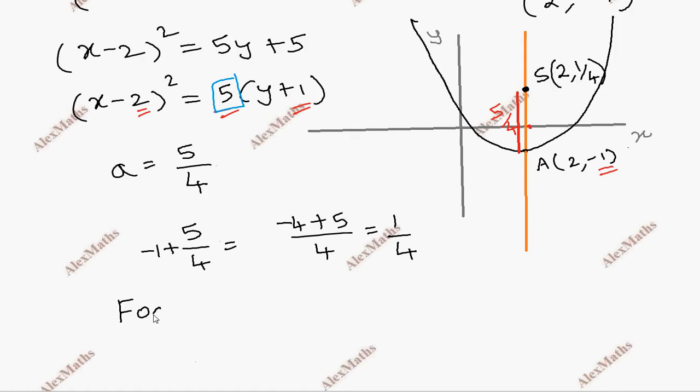That is minus 1 plus 5 by 4. The focus is at 2, 1 by 4.